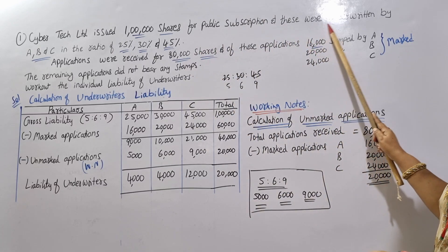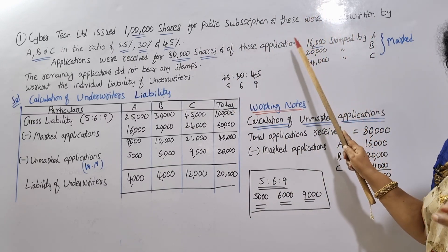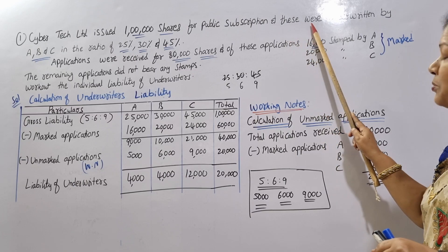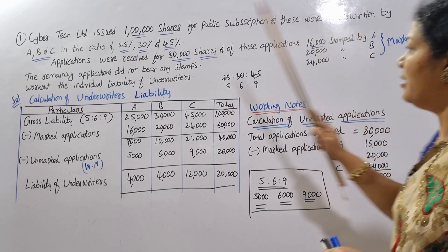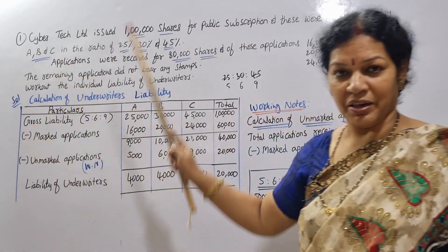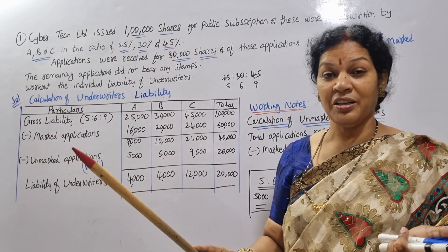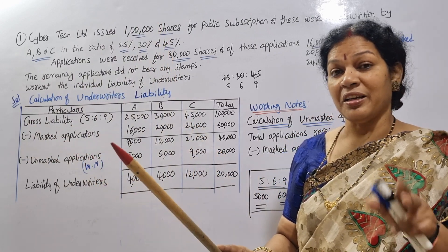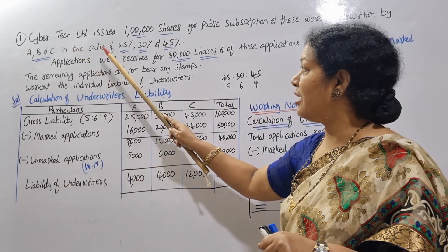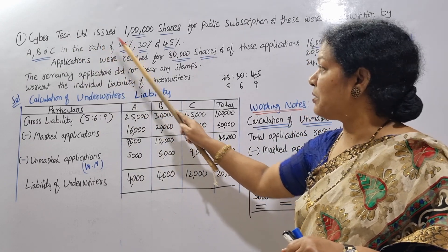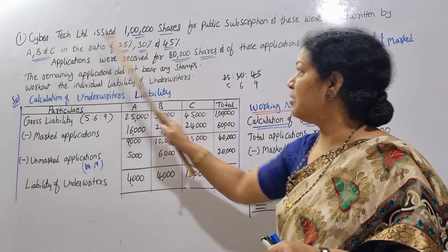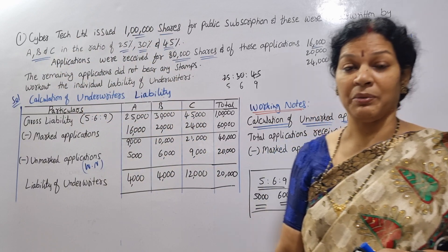These 1 lakh shares were underwritten by A, B, and C. The underwriting ratio is: A at 25%, B at 30%, and C at 45%.